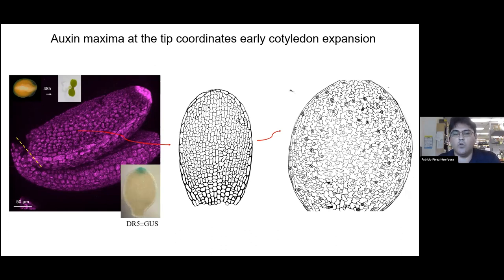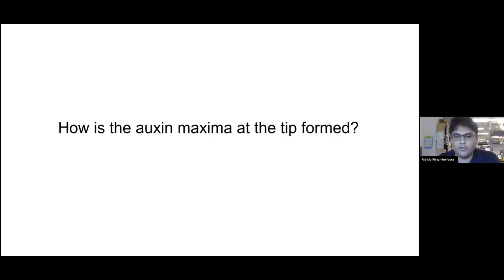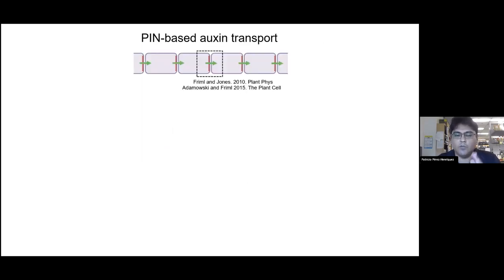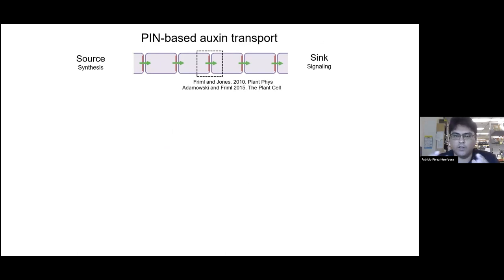That pattern is highly coordinated by an accumulation of this hormone at the tip of the cotyledon. So we were wondering how this auxin at the tip of the cotyledon is formed, and we immediately thought about cell-to-cell auxin transport, which is very important for shoot development. It is based on the polar localization of PIN family members that move auxin from a place of synthesis to a place of signaling.